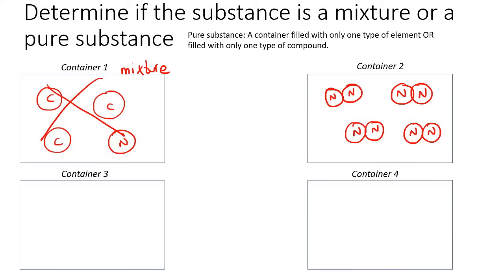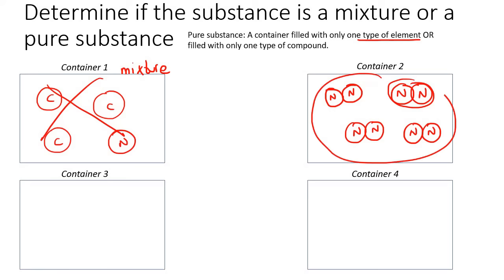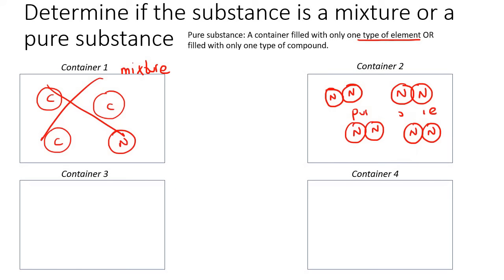In container number two, we've got nitrogen. You can think of it as a molecule because it has more than one atom, but it's only nitrogen — the element nitrogen. All of the particles here are the element nitrogen. The definition says a pure substance is a container filled with only one type of element, and here we only have nitrogen. So this is a pure substance.